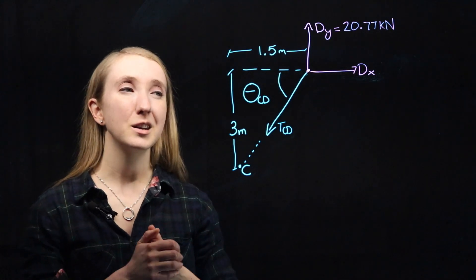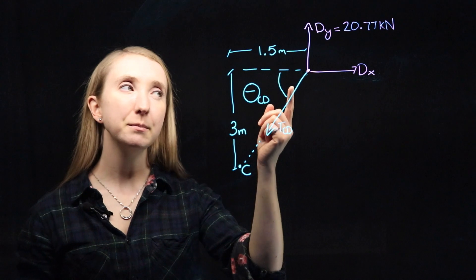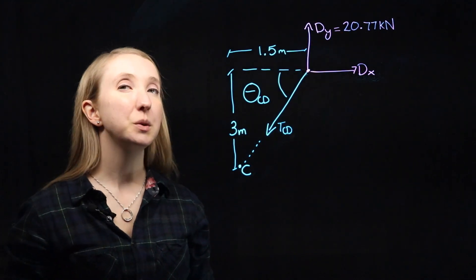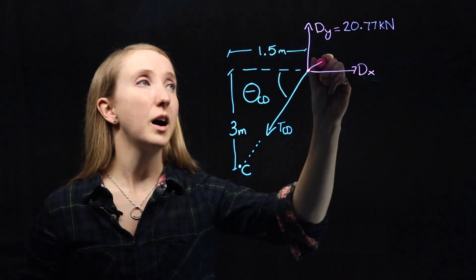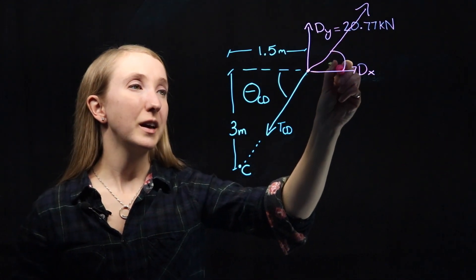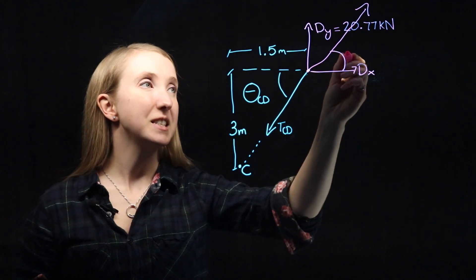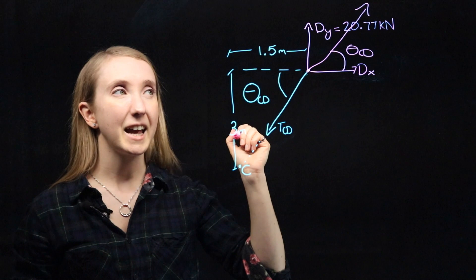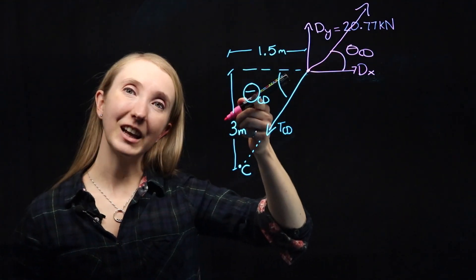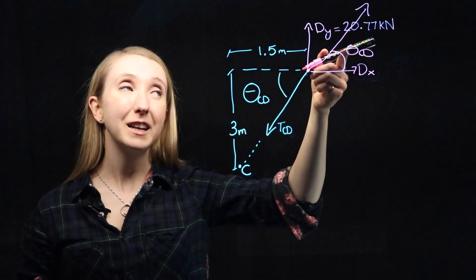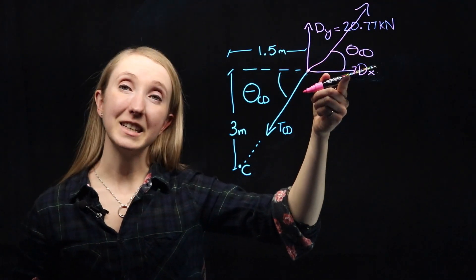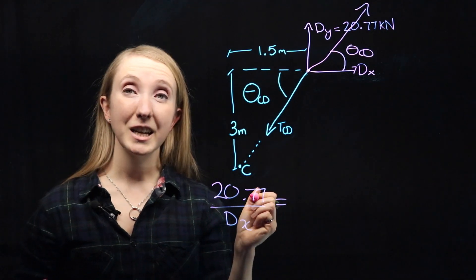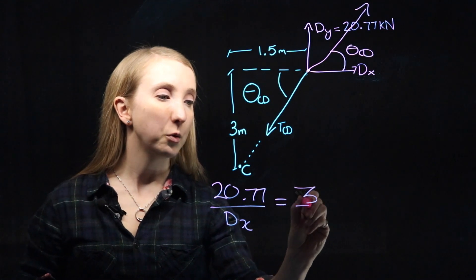So from force equilibrium, we know that the x component of TCD will have to match dx. And the y component of TCD will have to match dy. That means that if you were to do vector addition of dx plus dy, you would have to get something exactly equal and opposite to TCD, right down to the angle that that force makes with the horizontal. So since they're equal, that means that the tangent of this angle has to equal the tangent of this angle. So the tangent of theta CD would be equal to dy over dx, which is 20.77 over dx. And the tangent of this angle from geometry is equal to 3 over 1.5.